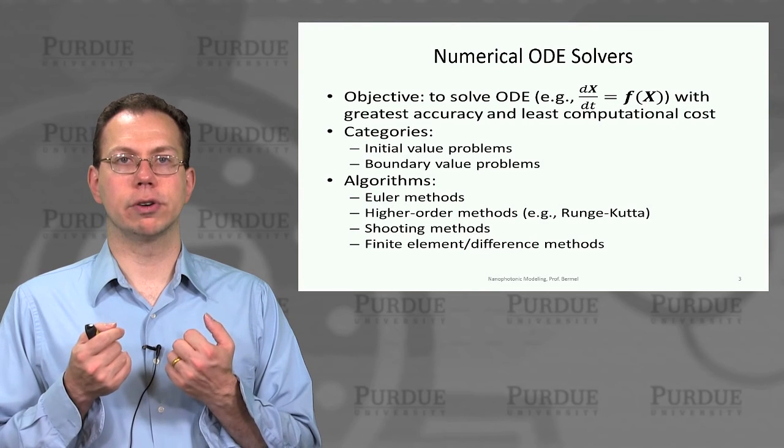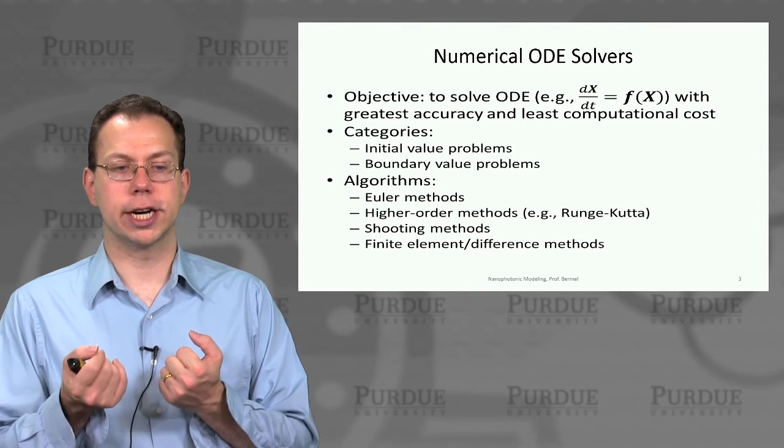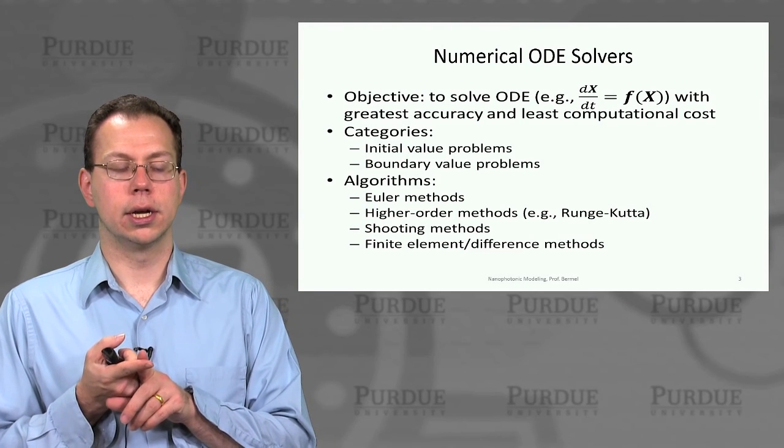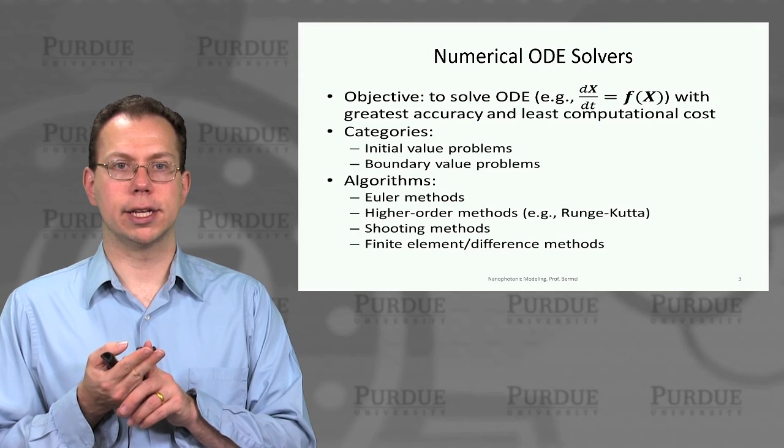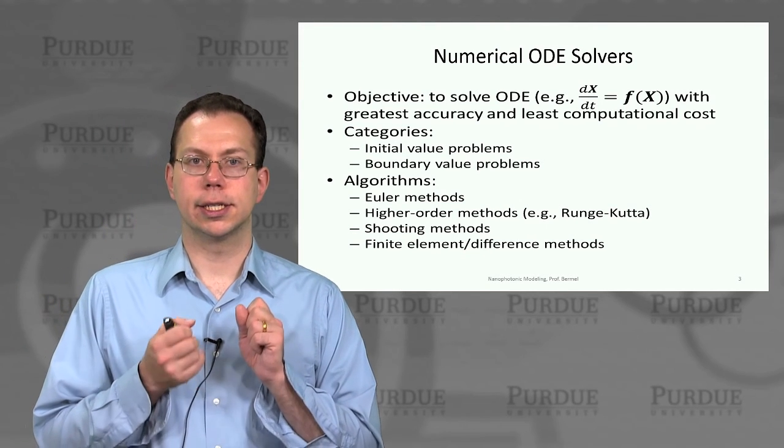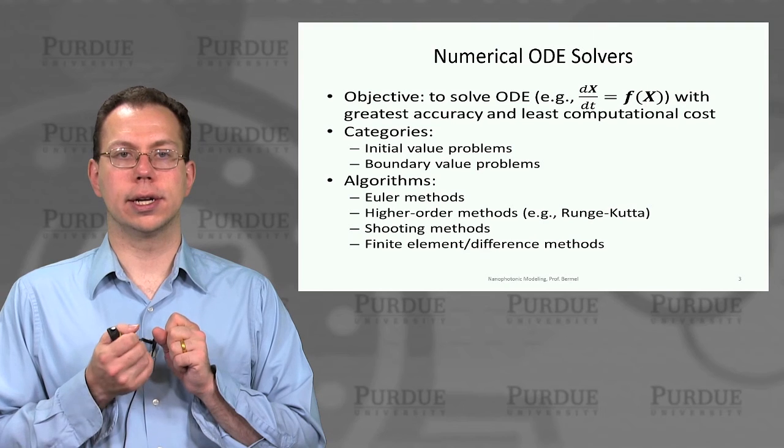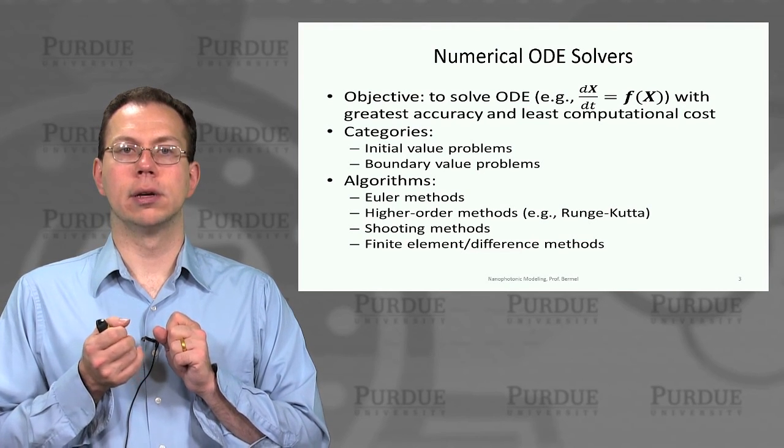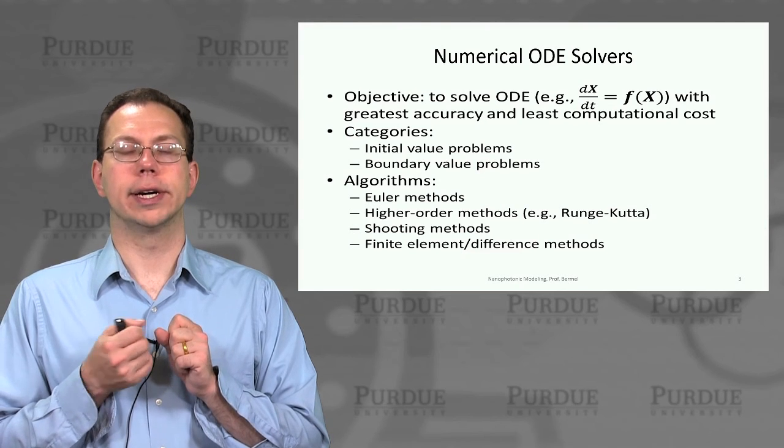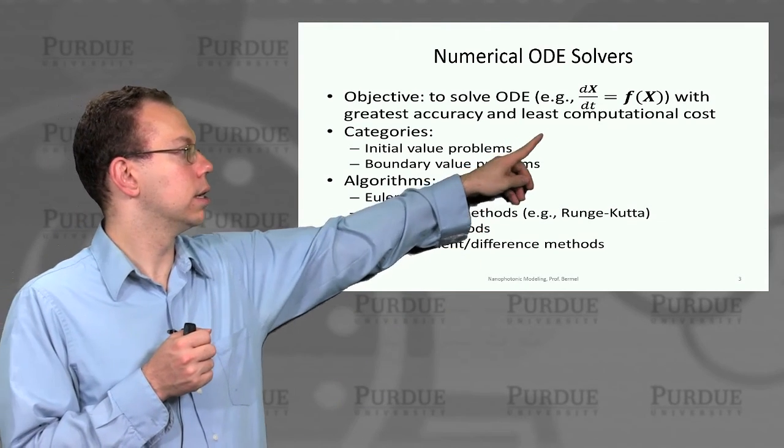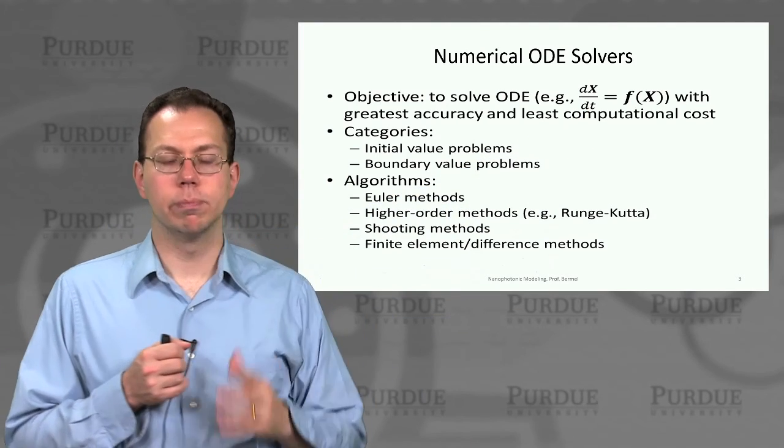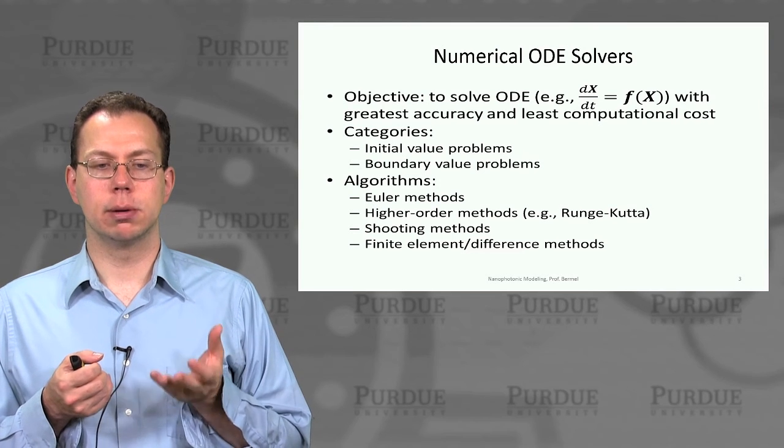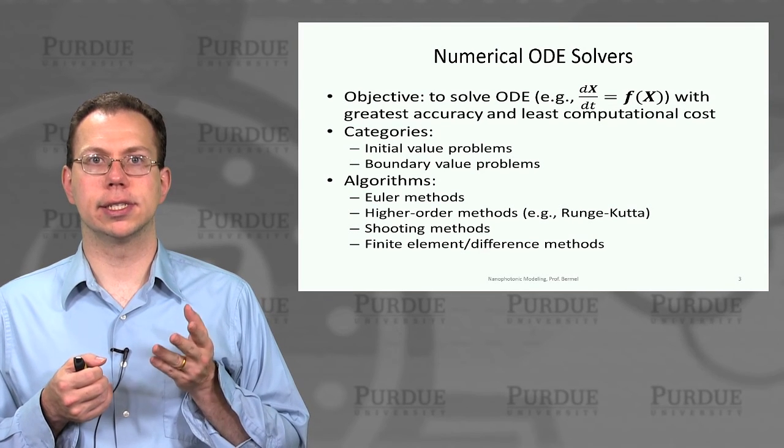There are a whole bunch of algorithms that have been developed to address ordinary differential equations. One of the most obvious ones are the Euler methods or the shooting methods where you would basically just take the differentials and turn them into delta. So you would say delta x equals f(x) times delta t. It's very simple rearrangement of this equation, very intuitive. But the challenge is it's not always the most accurate.